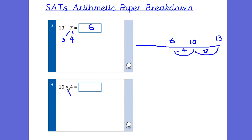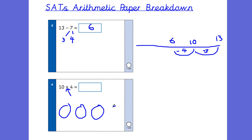Number 4 is the first multiplication question. In Year 2, the children need to know their 2, 10, and 5 times tables. This question says 10 times 4. It's not asking them to know their 4s, but it is asking them to know their 10s. That multiplication sign means 'groups of.' So it could be 10 groups of 4 or 4 groups of 10. I would get them to draw groups out if they weren't sure and count up in 10s: 10, 20, 30, 40.